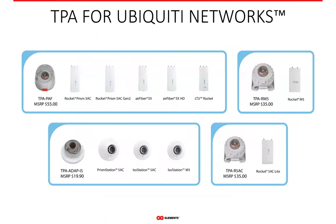For Ubiquiti, we have four adapters. The TPA Prism in the top left corner is compatible with the Rocket Prism 5AC, both first and second generation, as well as the AirFiber 5X and 5XHD, and the newest LTU Rocket. The TwistPort adapter for the IsoStation in the lower left corner is compatible with waveguide radios — IsoStation M5, PrismStation, and IsoStation 5AC. We also have adapters for older Ubiquiti radios such as Rocket M5, and the Rocket 5AC Lite with the TwistPort adapter R5AC.